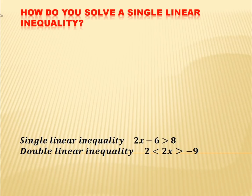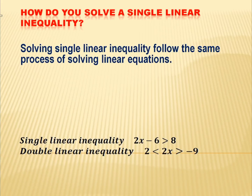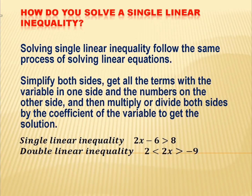In the case of a double linear inequality, we are using two inequality symbols, whether greater than or less than. Solving a single linear inequality follows the same process as solving linear equations. We simplify both sides, get all terms with the variable on one side and numbers on the other, then multiply or divide both sides by the coefficient of the variable to get the solution.